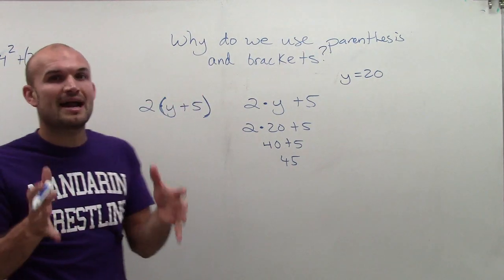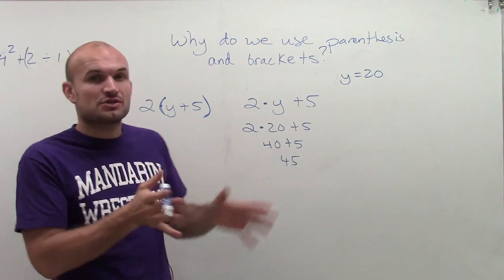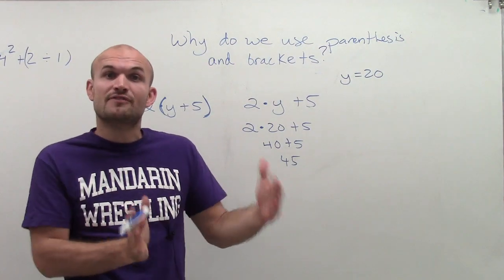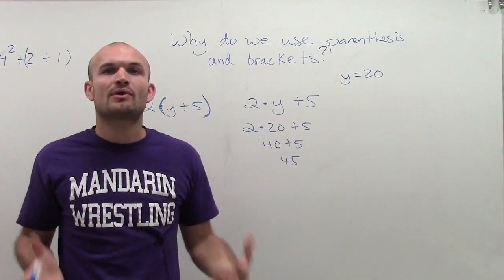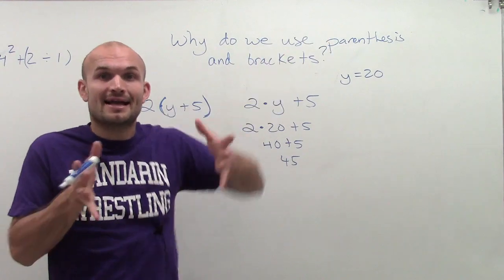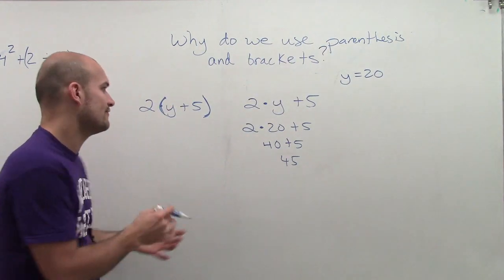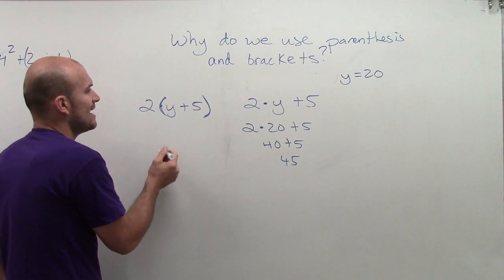So I'm going to bypass, not really bypass, but bypass the order of operations, where we say we have to do multiplication and division before we do addition and subtraction. So the order of operations allows us to kind of jump ahead and do an operation that we wouldn't do before another. So therefore, I have y plus 5.